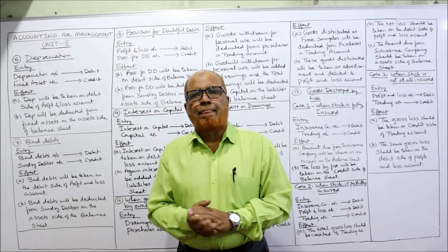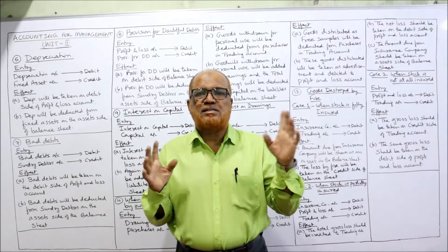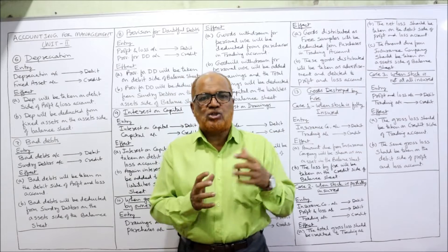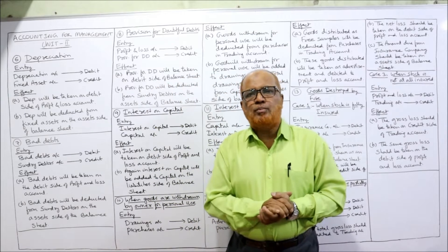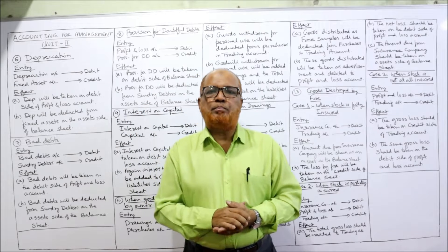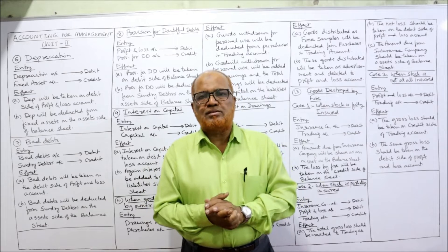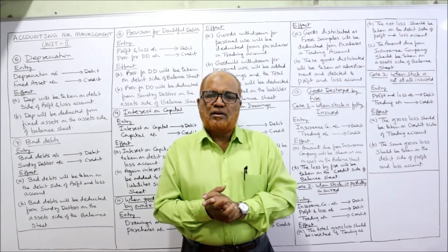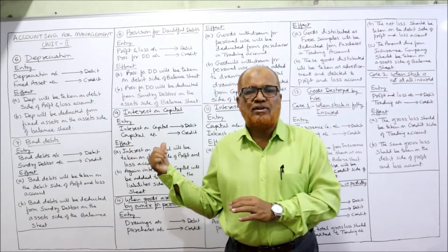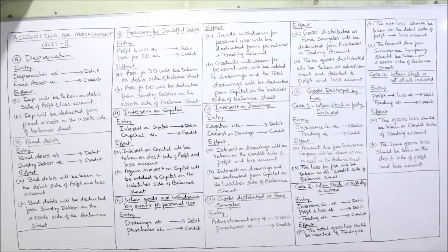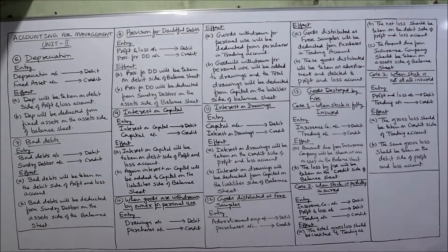If you have not watched the previous videos, I suggest you go to the playlist of my channel, select the subject Accounting for Management, select the videos of Unit Number Two — Preparation of Financial Statements — and watch those videos. Be perfect on how to make the adjustments, then only we can proceed. Before going ahead, take a screenshot of the points I have written on the board, then I'll explain all the adjustments.